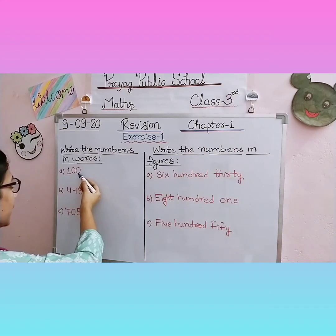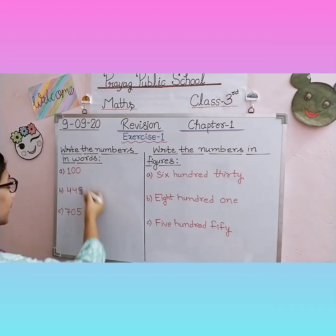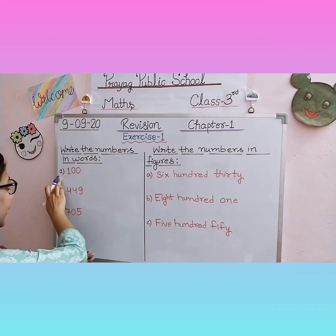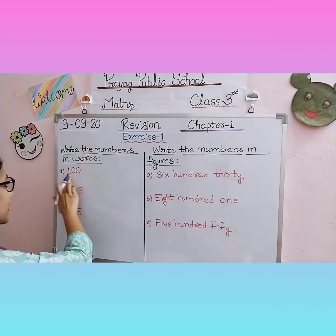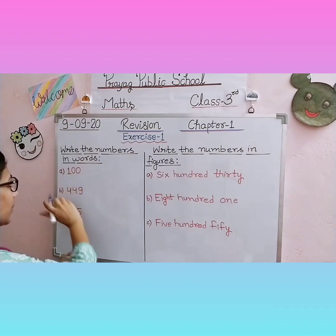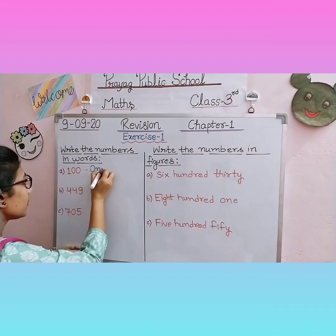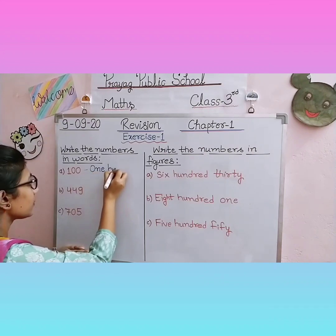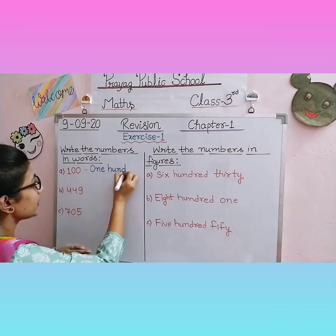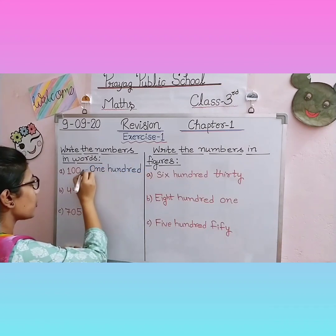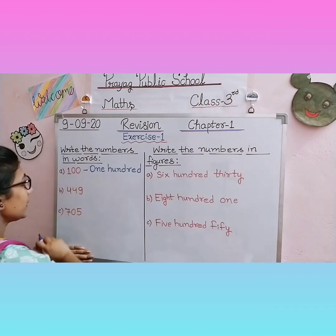The numbers in the question are given in figures — we call these figures — and we have to write them in words. Look at A. What is the number? One, ten, hundred. Let us count and check: one hundred. So what will we write in words? One hundred — H-U-N-D-R-E-D. You will write the correct spelling. If you don't know the spellings yet, please learn them.